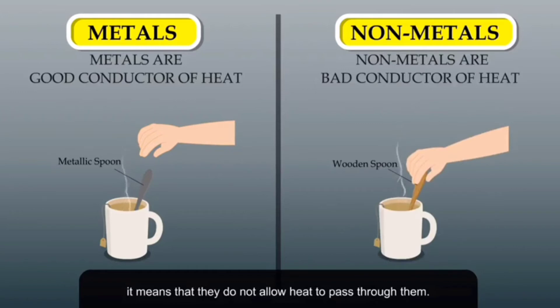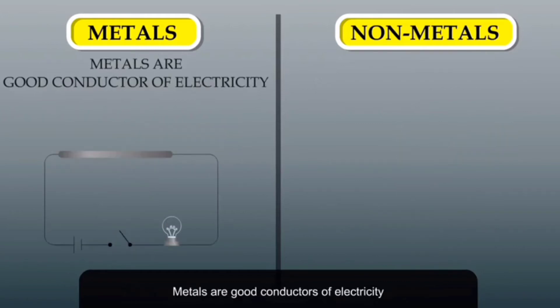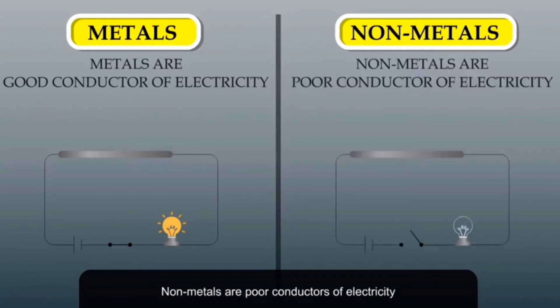Metals are good conductors of electricity. They allow electricity to pass through them. When a metal is placed in the circuit, the bulb glows, which shows that metals are good conductors of electricity. Non-metals are poor conductors of electricity. When a non-metal is placed in the circuit, the bulb does not glow, which shows that non-metals are poor conductors of electricity.